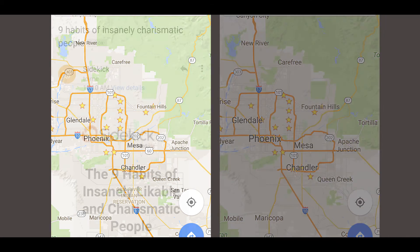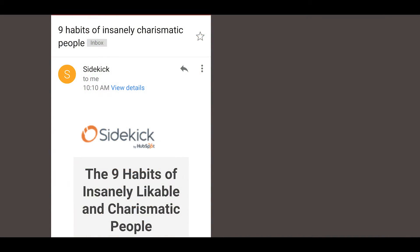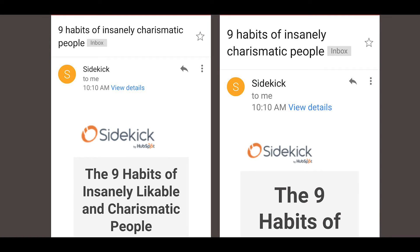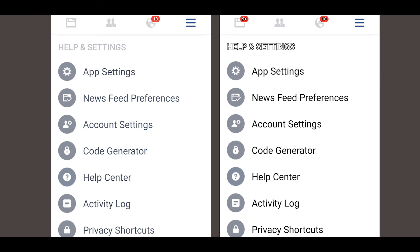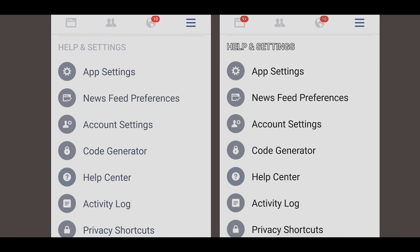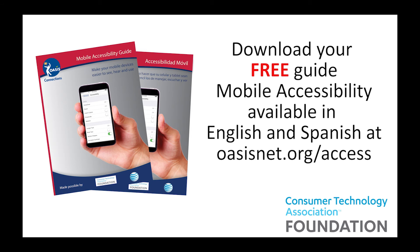Larger text makes things bigger, and high contrast makes letters stand out by making text pure black or white and adding a bold outline. Download your free guides to mobile accessibility, available in English and Spanish, at oasisnet.org/access.